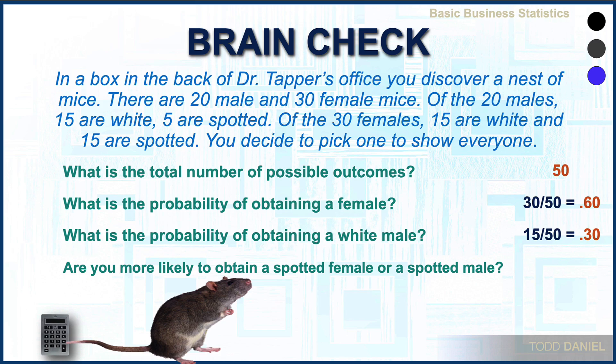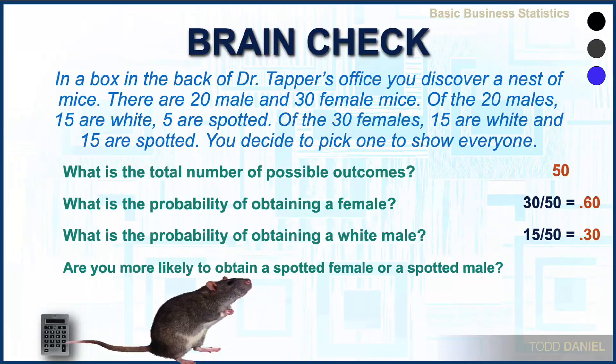Are you more likely to obtain a spotted female or a spotted male? To answer this, we're going to do some comparisons — we'll calculate both probabilities and see which one is larger. For spotted females: 15 divided by 50 is 0.30. For spotted males: 5 divided by 50 is 0.10. It is more likely that if you pick a mouse at random, you would obtain a spotted female.